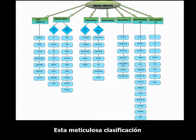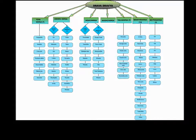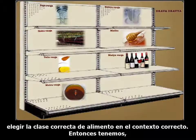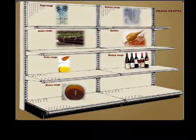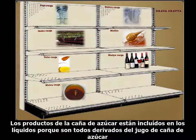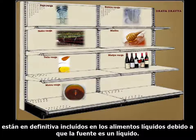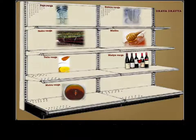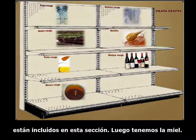This meticulous classification is extremely important for us to be able to choose the right kind of foods in the right context. We can see the classification of the liquids beginning with water and milk and then the sugarcane products. The sugarcane products are included in the liquids because they are all derived from sugarcane juice. Even though there are some solids involved, they are included in the liquid foods because the source is a liquid. Similarly, milk by itself is liquid, but many products derived from milk are solids, yet they are also included in this section. And then we have honey.